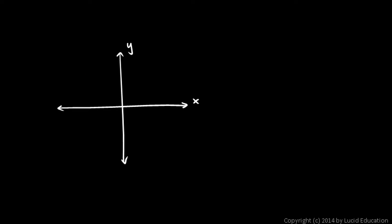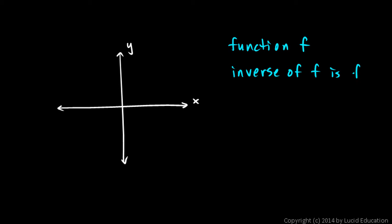This can also apply to functions. If we have some function and we call it f, then the inverse of function f has a notation. The inverse of f is referred to as f inverse. This little notation here is not an exponent — which is an unfortunate notation because it looks like one — but it does not mean one over f. That is not a negative exponent. Take it as a whole: that is f inverse.